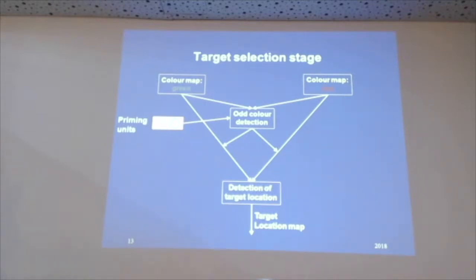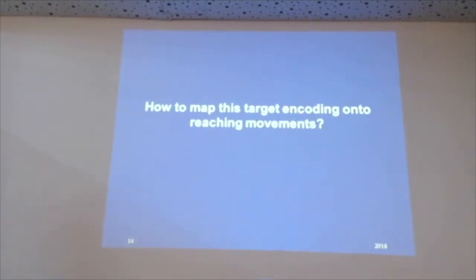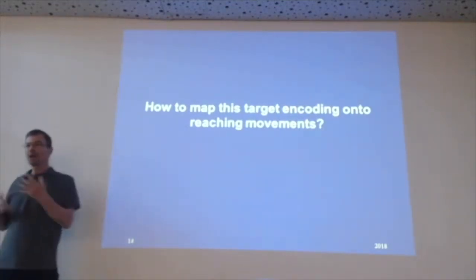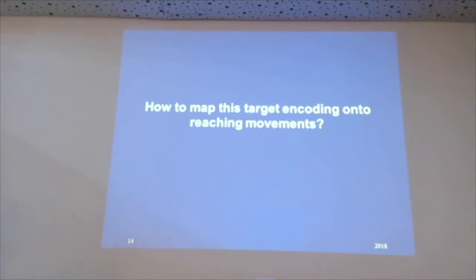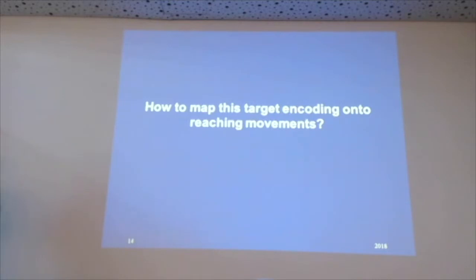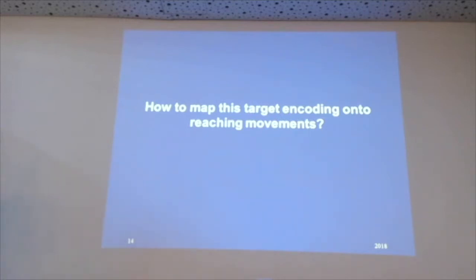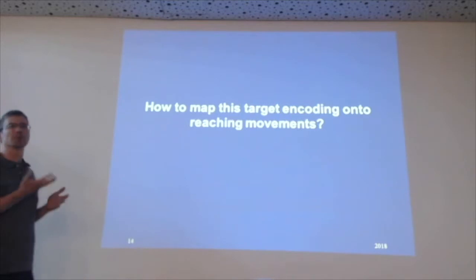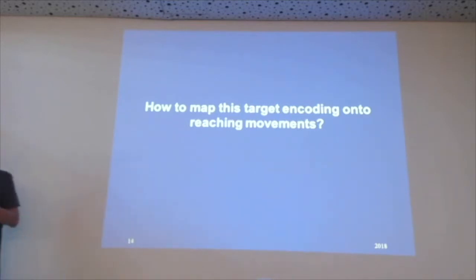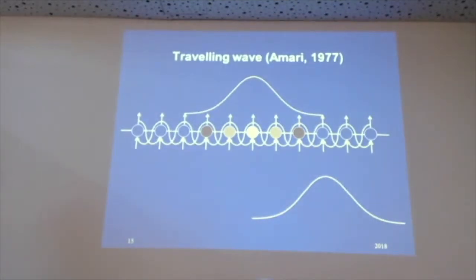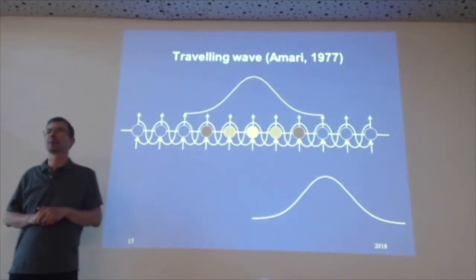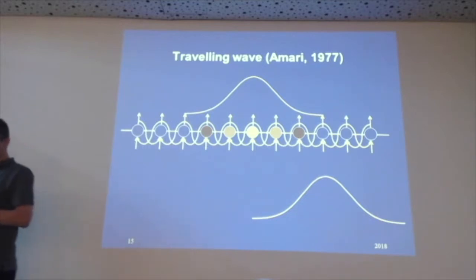The other aspect is that I can implement color priming. I can model color priming by having some priming units that send a short-term memory signal remembering what color was present in the last trial, which in turn modulates the color detection — speeding up or slowing down depending on whether there's a switch or a repeat of the target color, and particularly modulating the detection of the target location.